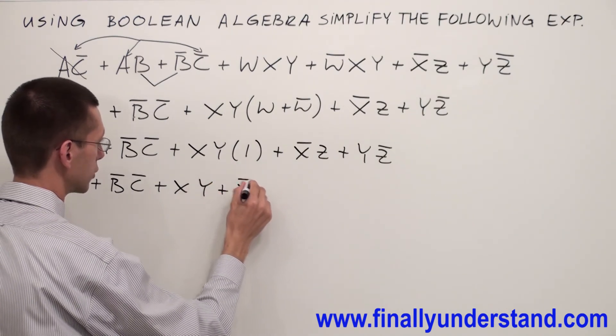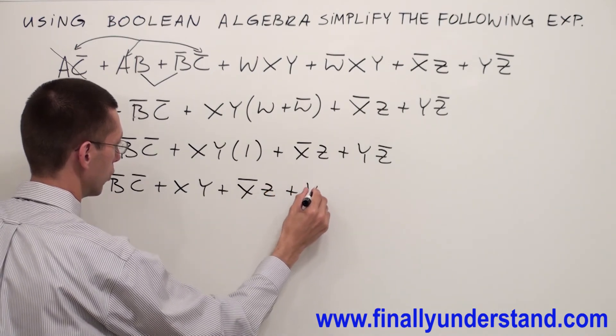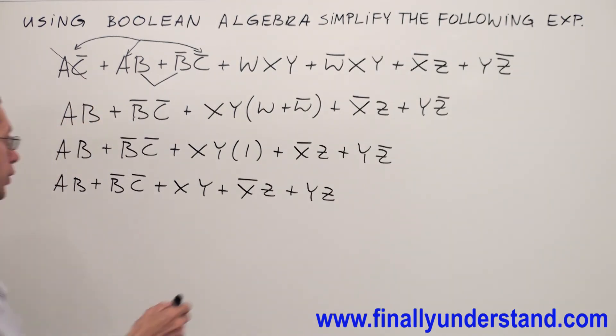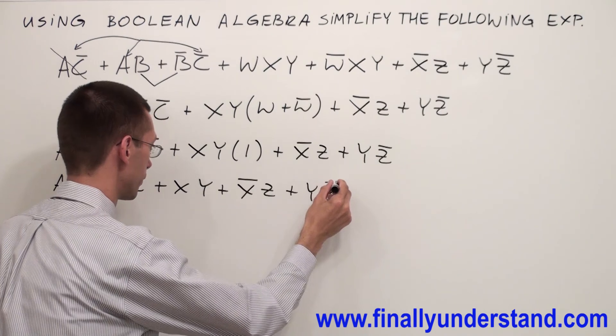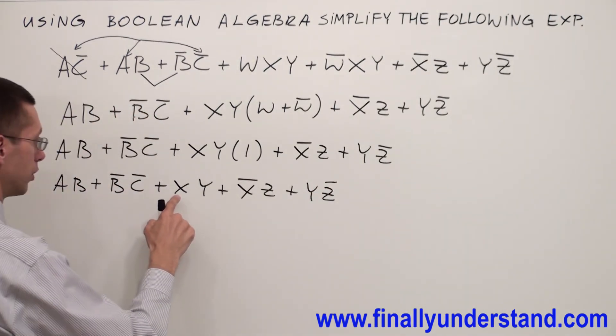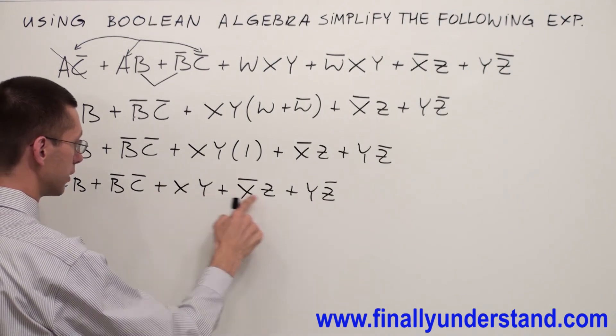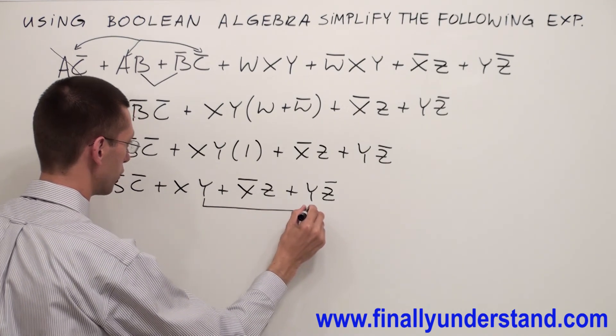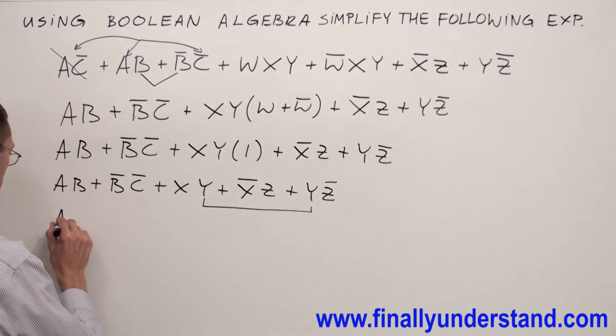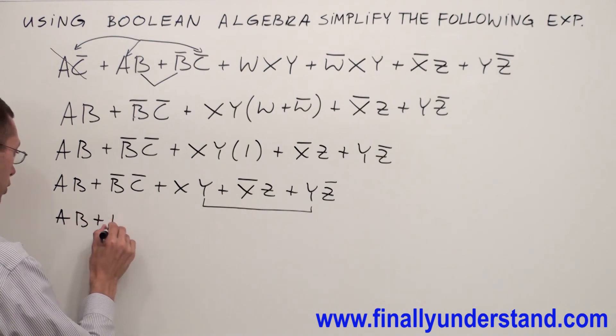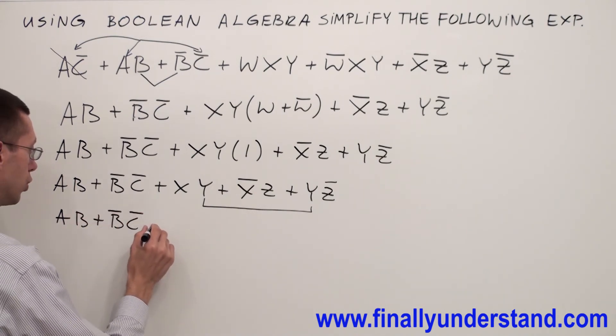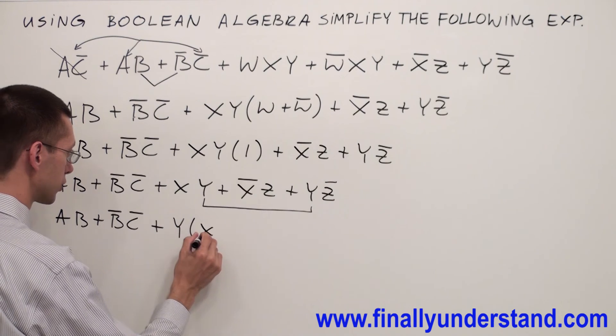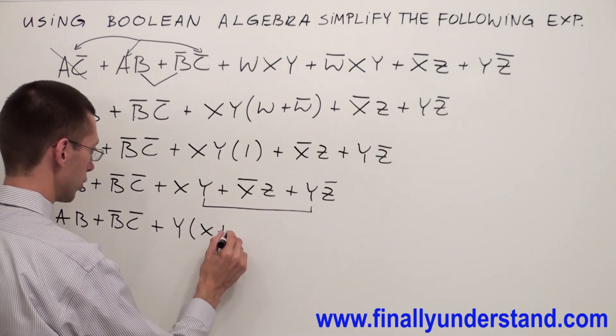Or X'Z or YZ. Now let's take a look what we can do over here. We have Y in these two terms. We are supposed to factorize this Y. So I am going to have AB or BC' or Y. And inside of the parenthesis, I am going to have X or Z'. Or X'Z.